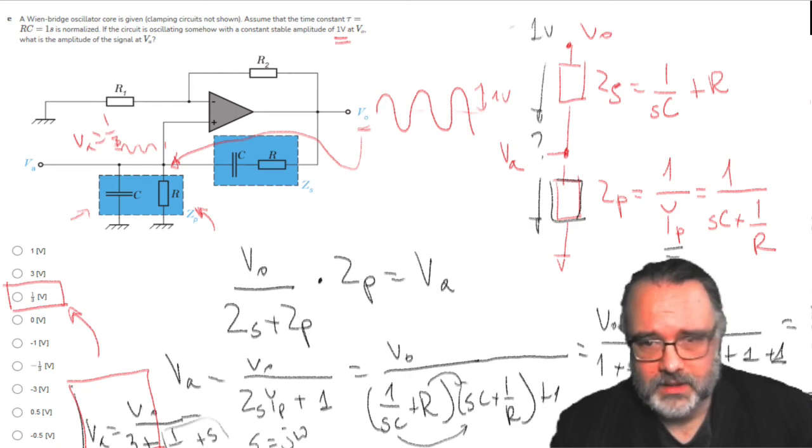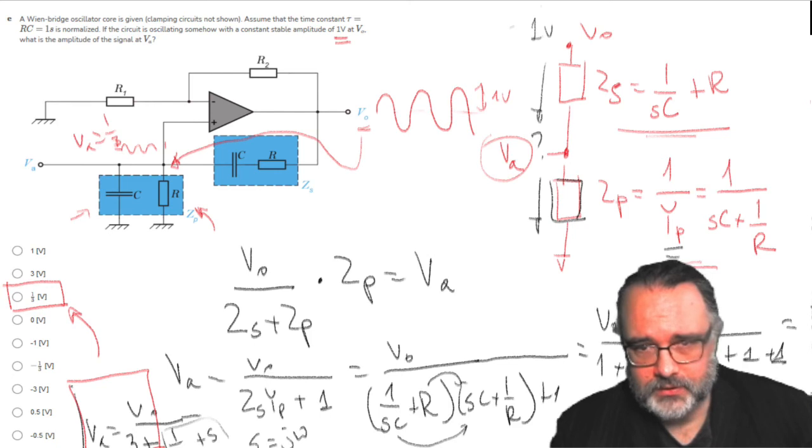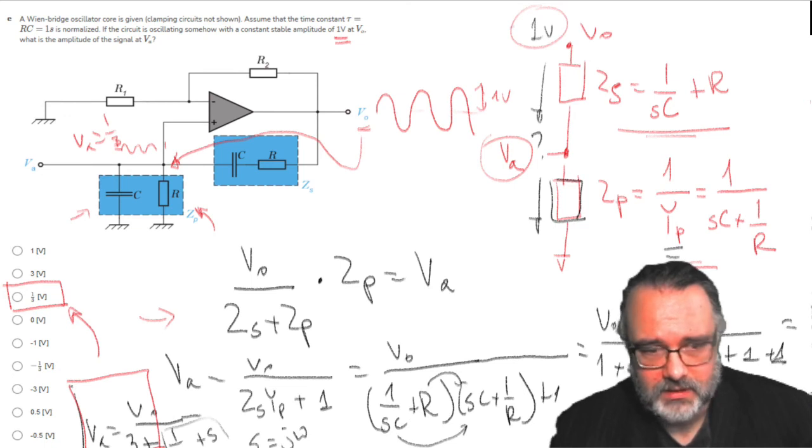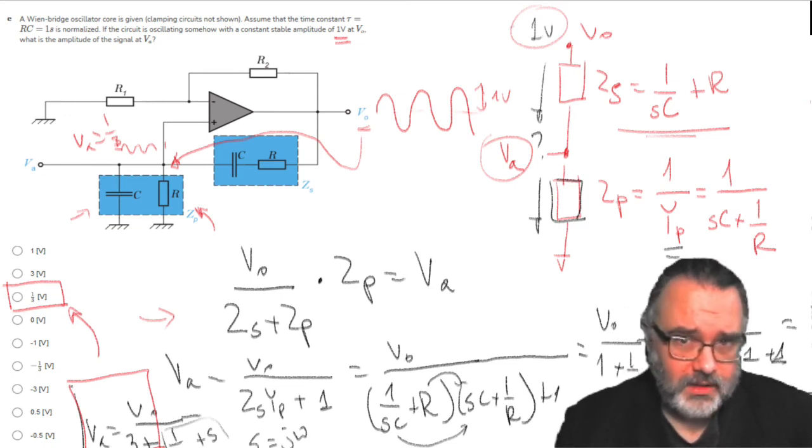Again what I did is that I analyzed this impedance divider like this. So Va takes a portion of Vout, and this is here how I expressed it. So I get an expression in S domain.